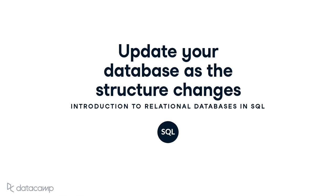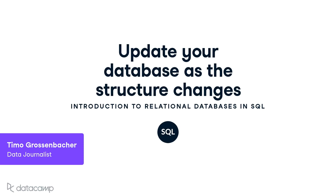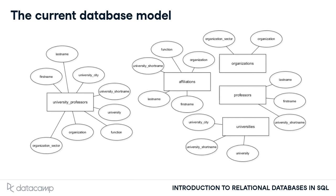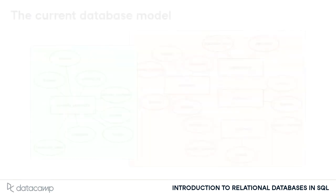Well done so far! You now have a database consisting of five different tables. Now it's time to migrate the data. Here's the current entity relationship diagram, showing the five tables.